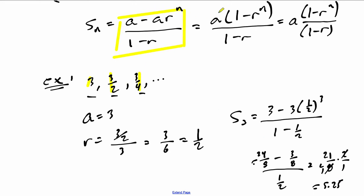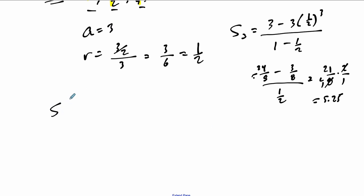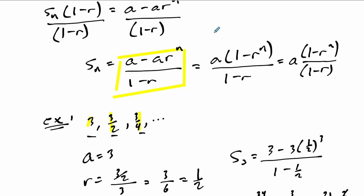And that's in this form, but as I promised, I want to show all three. You can see how they all end up being equivalent. In the second form here, a is 3 times 1 minus 1 half to the third over 1 minus 1 half. On the bottom we're still getting a half. Up top, this is 1 minus 1 eighth, so that's 8 over 8 minus 1 over 8, which is 7 over 8 times 3, which is 21 over 8. And that's going to give us 42 over 8, which is also 5.25.